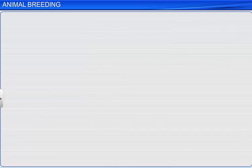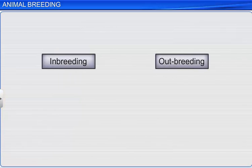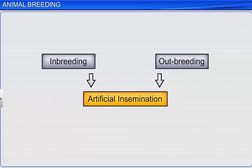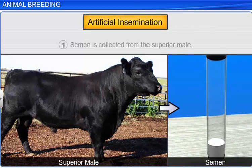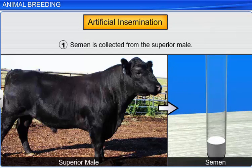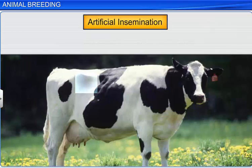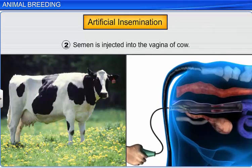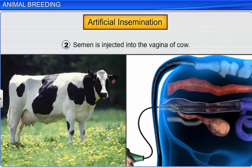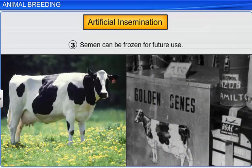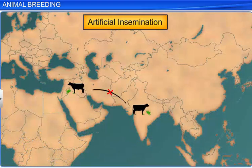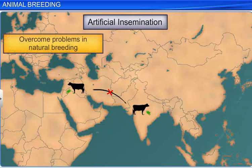Both inbreeding and outbreeding can also be carried out using controlled breeding experiments. Artificial insemination is one such method. In artificial insemination, semen is first collected from the superior male. The semen is then injected into the reproductive tract or vagina of the female animal, or can be frozen for future use. Thus, artificial insemination is carried out to overcome problems in natural breeding and also to carry out mating between animals that are geographically separated.